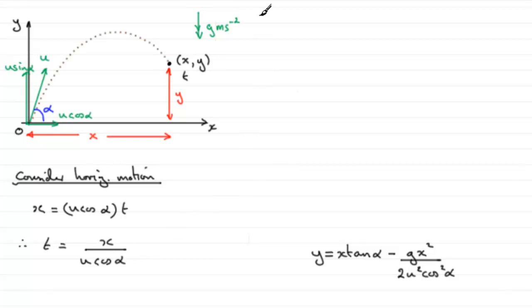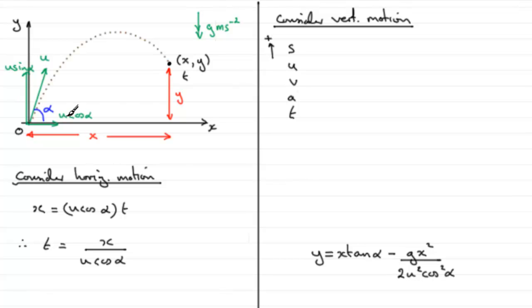So we now look at the vertical motion. Consider the vertical motion. Now we've got the acceleration due to gravity acts in the vertical sense, so we need to consider a SUVAT based equation. We'll take upwards, which I'd always recommend the initial direction of projection, as being in the positive sense. So S the displacement is going to be Y. U the initial velocity, well that's going to be U sine alpha.